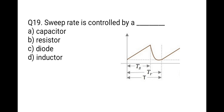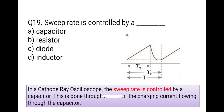The next question: sweep rate is controlled by what? The correct option is a capacitor. In CRO, the sweep rate is controlled by a capacitor through the means of the charging current flowing through it.